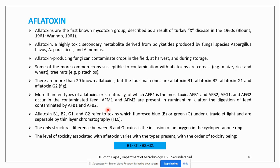More than 10 types of aflatoxin occur naturally, of which AFB1 is the most toxic. AFB1, B2, AFG1 and G2 occur in contaminated feed. AFM1 and M2 are present in ruminant milk after digestion of feed contaminated by AFB1 and B2. Aflatoxins B1, B2, G1 and G2 fluoresce blue and green under ultraviolet light when separated by TLC. The only structural difference between B and G toxins is the inclusion of an oxygen in the cyclopentane ring.